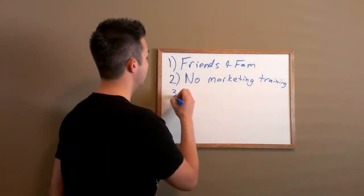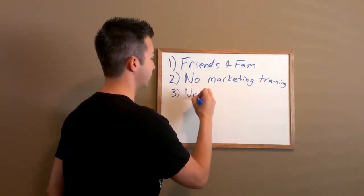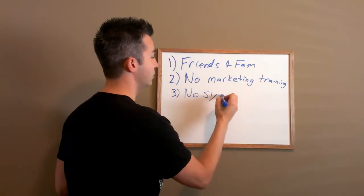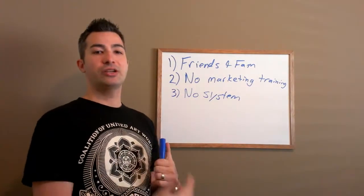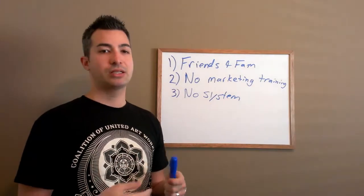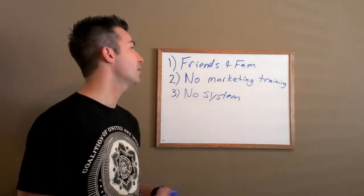So third thing is there's no system. There's no system in place. It all comes down to, again, friends and family. When you're talking to your friends and family, they have no business sense. They don't want to get into a home-based business, anything like that.